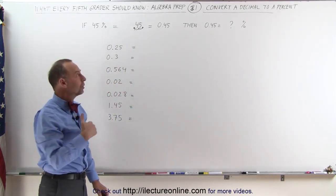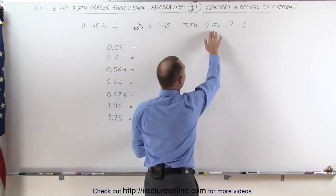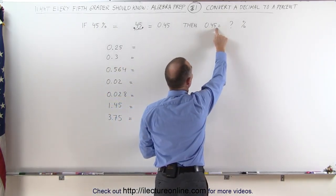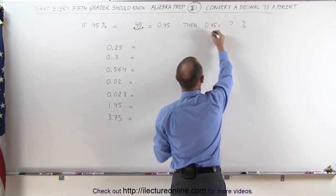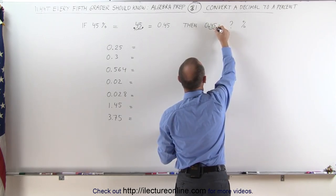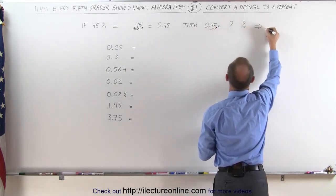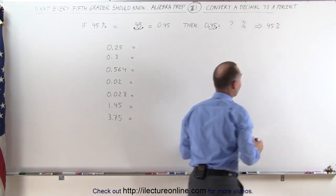Then how do we go the other direction? Well, we take the number 0.45, move the decimal place over to the right two spots, and then we write it as a percent. In other words, we take the decimal place, move it over once, twice, put it right there, which means that this is equal to 45%. That's all there is to it.